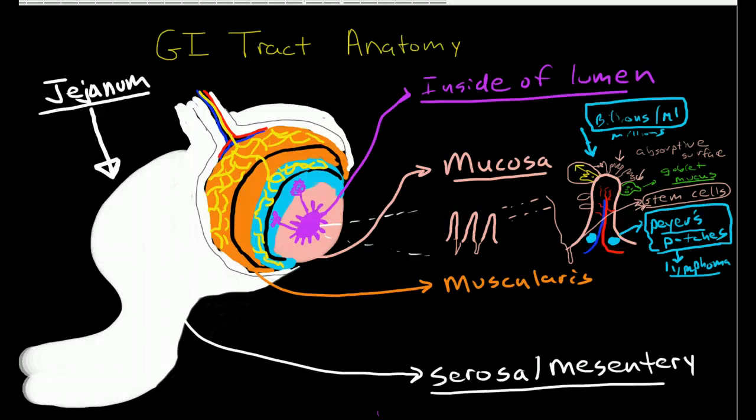Now there's a layer just in between the mucosa and the muscularis called the submucosa, and this submucosa is filled with blood vessels, and it also has what's called submucosal glands that also produce large amounts of mucus.